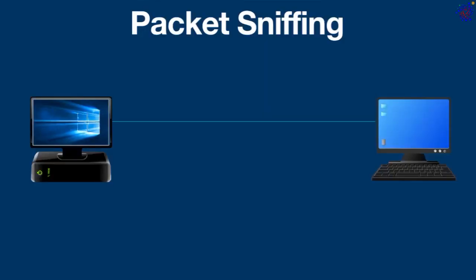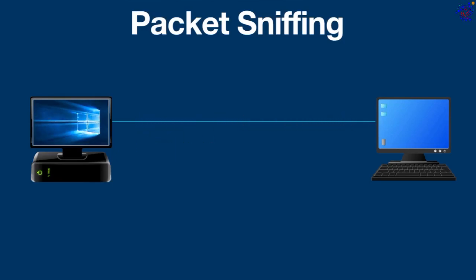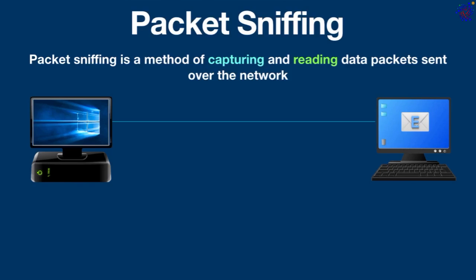When data is transmitted over a computer network, it is broken down into smaller pieces at the sender's device called packets, and reassembled at the receiver's device in the original format. Packet sniffing is a method of capturing and reading data packets sent over a computer network. It is similar to wiretapping a telephone network.